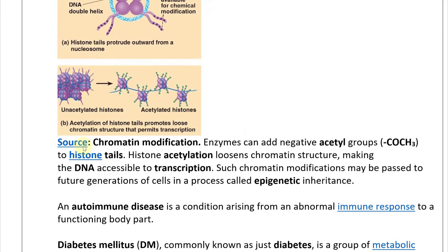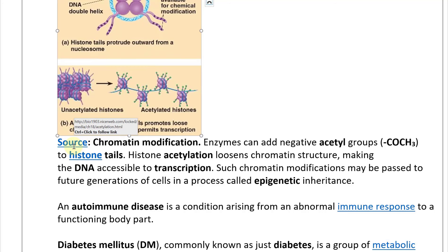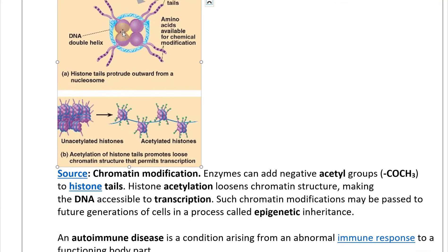Chromatin modification enzymes can add negative acetyl groups — COCH3 — to histone tails. Histone acetylation loosens chromatin structure, making the DNA accessible to transcription. Such chromatin modifications may be passed to future generations of cells in a process called epigenetic inheritance. Notice: the DNA sequence is not changed — just the protein the DNA spools around is modified, activating or deactivating genes based on accessibility.